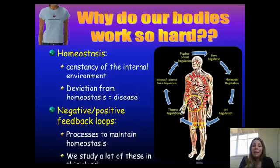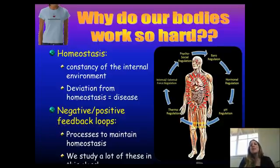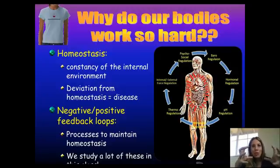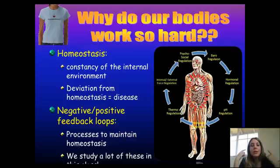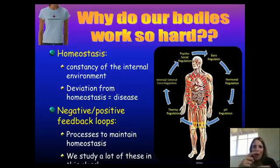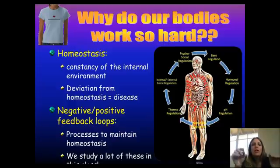The second type is positive feedback loops, where it's good to have more of a good thing temporarily. For example, when a woman goes into labor, her uterus starts to contract, which causes more of the hormone oxytocin to be released. The uterus signals the brain to release more oxytocin, causing more contractions, stronger and stronger, until the baby is born. Then the body switches to a negative feedback mechanism, which stops the oxytocin from being produced.